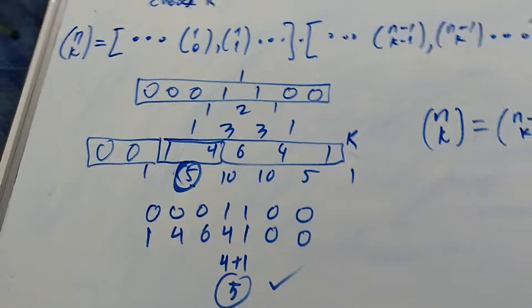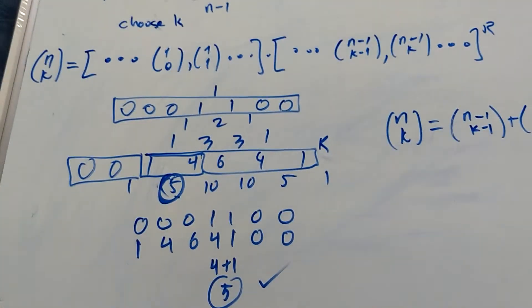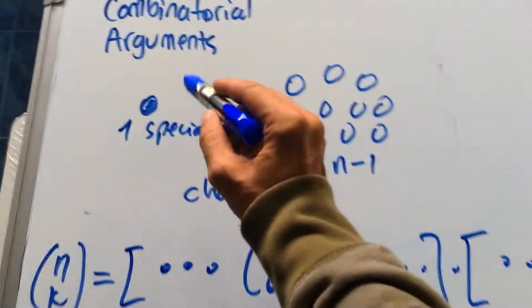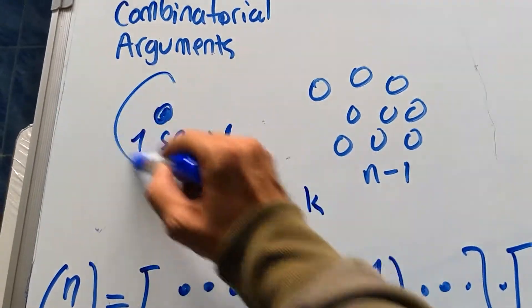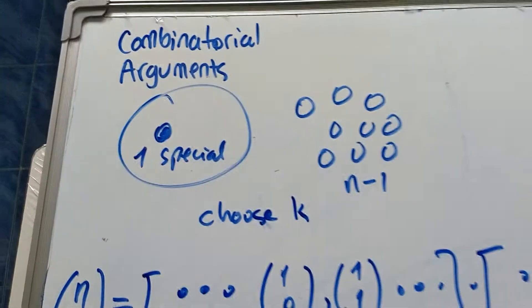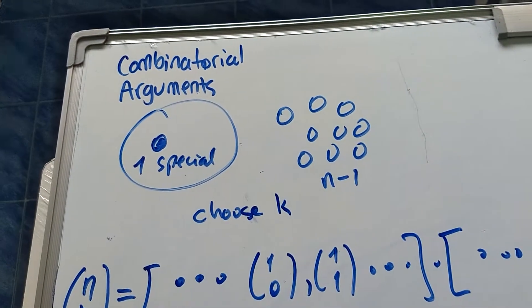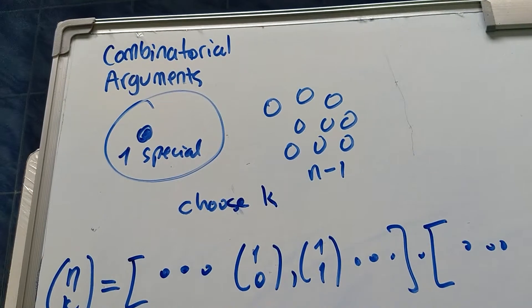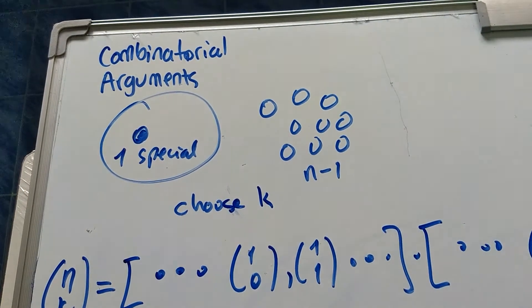I encourage you to practice these. Take any rows, extend them any which way, do the dot product, and see that it works. In the next video, we're going to examine what happens when we have two or more special objects. See you then.